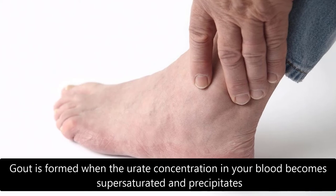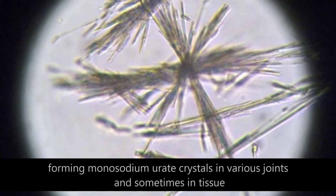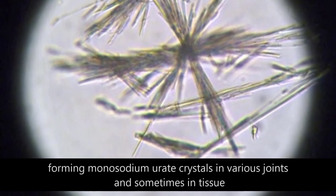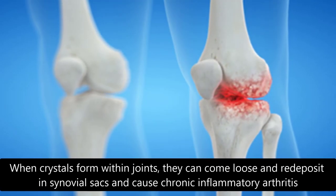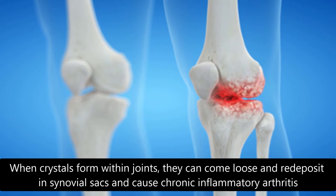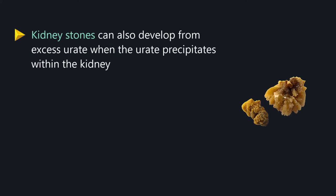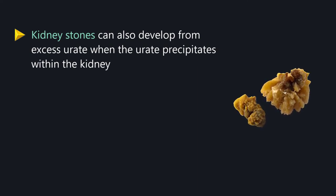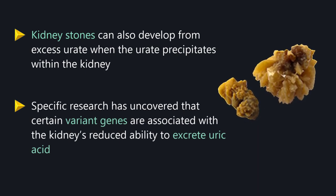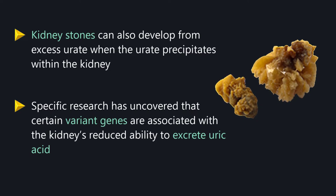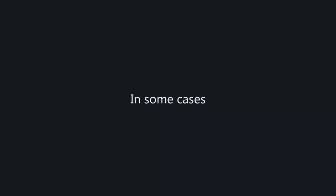Gout forms when the urate concentration in your blood becomes supersaturated and precipitates, forming monosodium urate crystals in various joints and sometimes in tissue. Crystals can come loose and redeposit in synovial sacs, causing chronic inflammatory arthritis. Kidney stones can also develop from excess urate when it precipitates within the kidney. Specific research has uncovered that certain variant genes are associated with the kidneys' reduced ability to excrete uric acid.